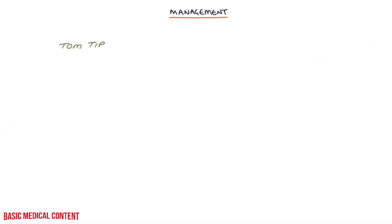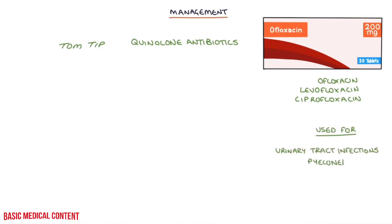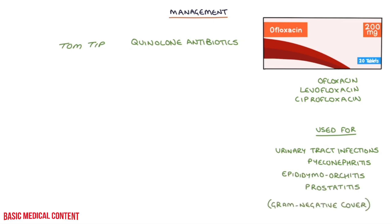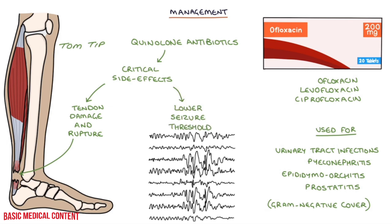A top tip for you: quinolone antibiotics such as ofloxacin, levofloxacin, and ciprofloxacin are powerful broad-spectrum antibiotics often used for urinary tract infections, pyelonephritis, epididymo-orchitis, and prostatitis — they give excellent gram-negative cover. It's worth remembering two critical side effects, as these may be tested in exams and are essential to inform patients about: tendon damage and tendon rupture, notably of the Achilles tendon, and they lower the seizure threshold, so they need to be used with caution in patients who have epilepsy.